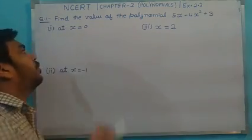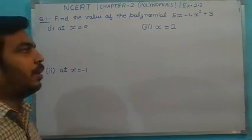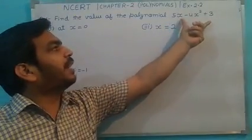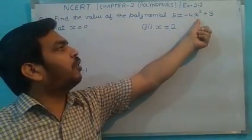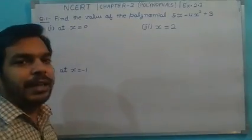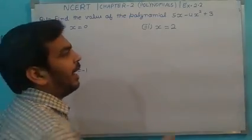The first question is: find the value of the polynomial. The polynomial is p(x) = 5x - 4x² + 3. This is an expression as a polynomial, and the polynomial can be denoted as p(x).